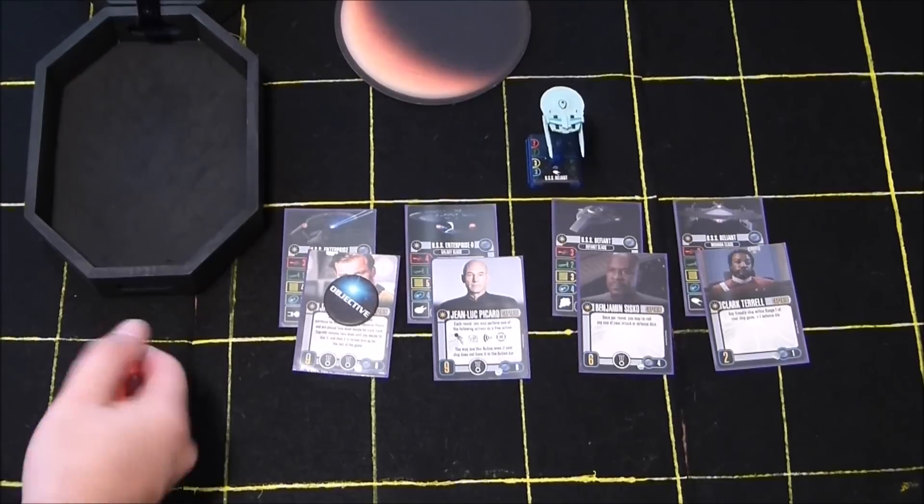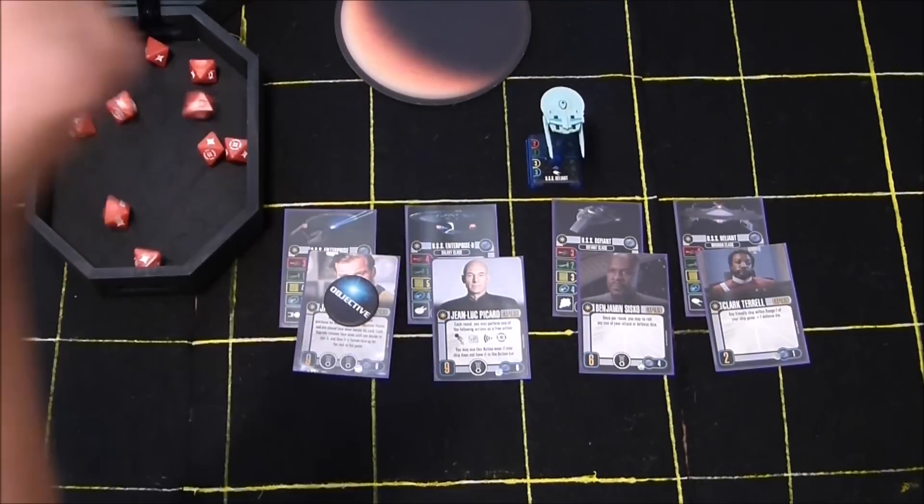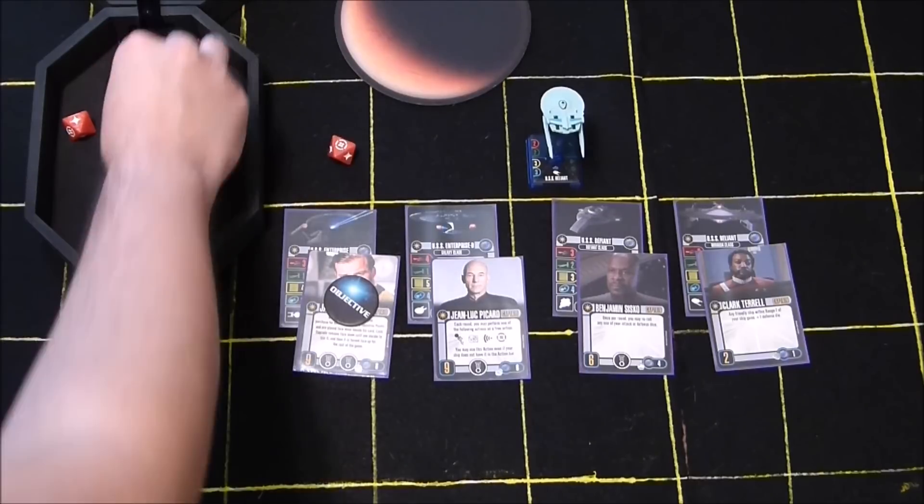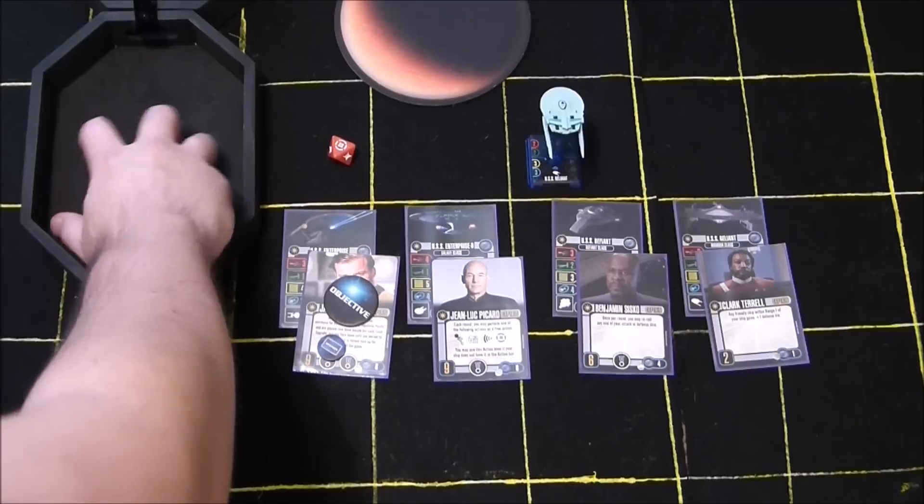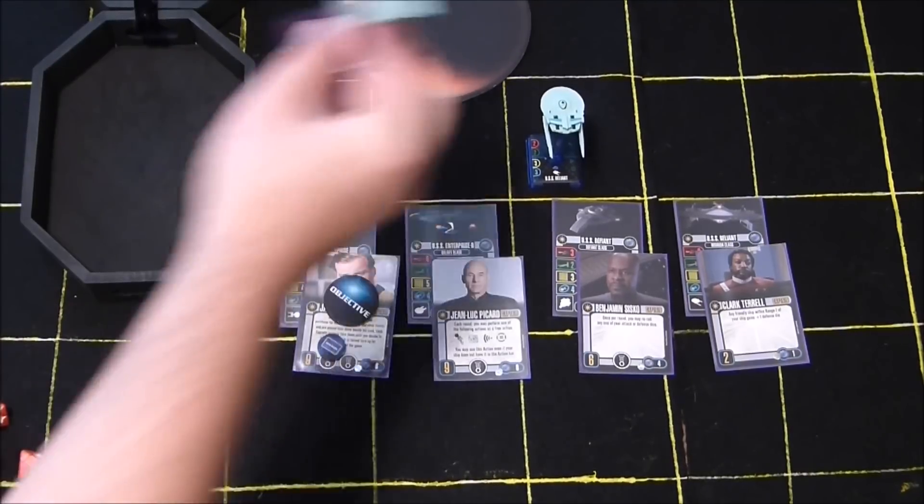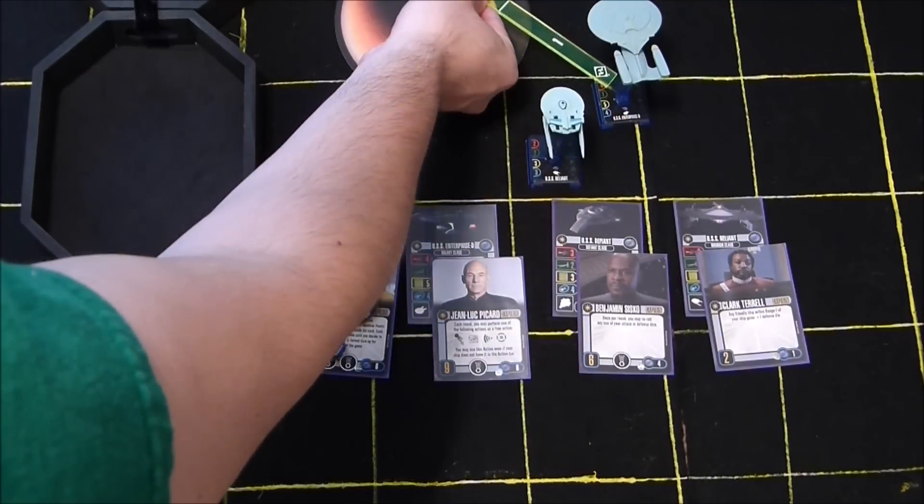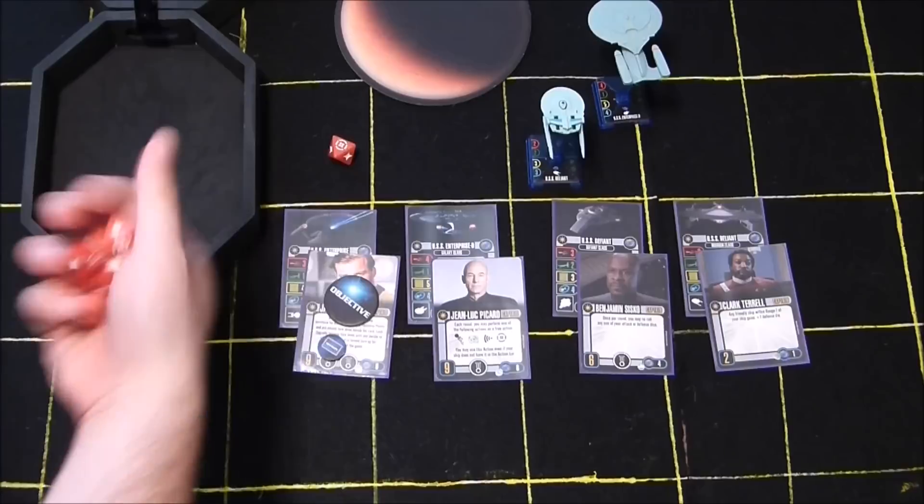After at least one round of play and one of your captains is on the planet, all of your ships may take the following action. If the ship is within range one to two of the planet, you may use your action to roll a number of dice equal to the captain's skill of one of your captains on the planet.